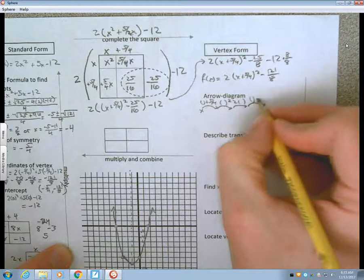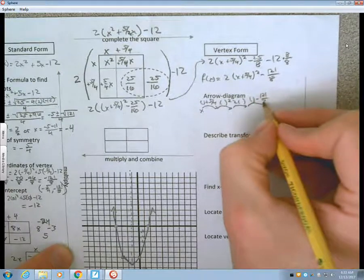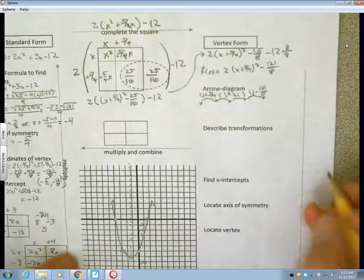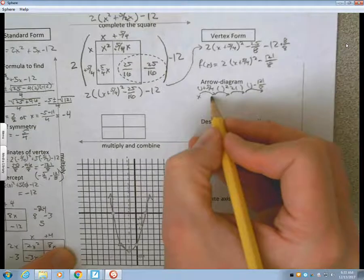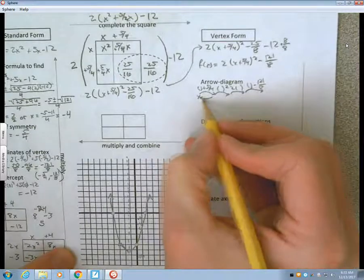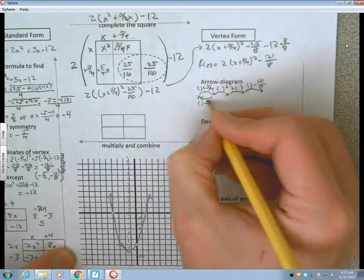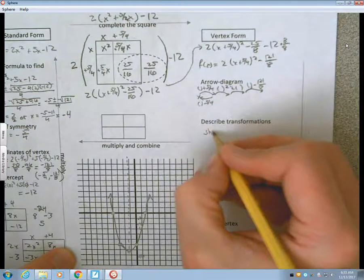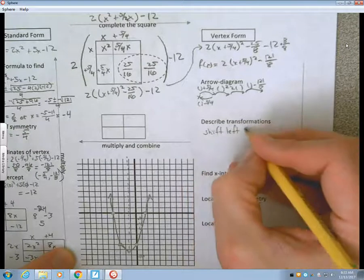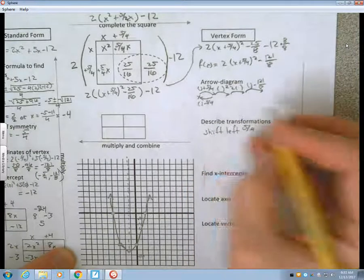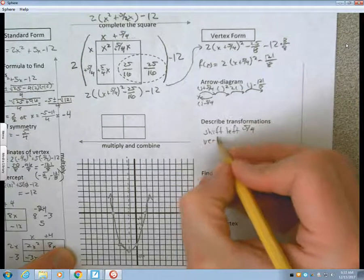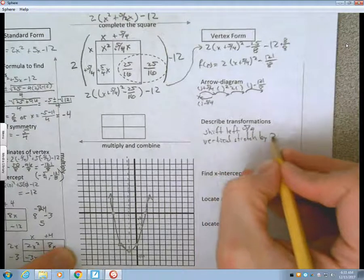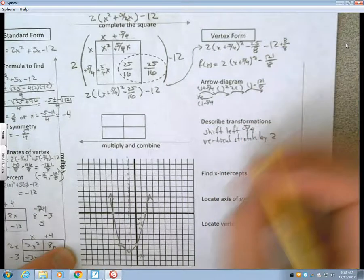Describing the transformations, now my transformations begin at the parent function. I have one transformation arrow on the left-hand side of the parent function, which would be a minus 5 fourths, so that is a shift left, 5 fourths. And then, I have a multiplication by 2, so that's a vertical stretch by 2. And then, subtracting 121 eighths, so that's a shift down, 121 over 8.